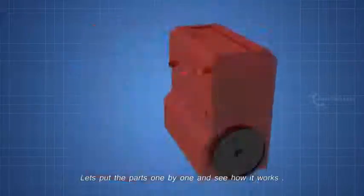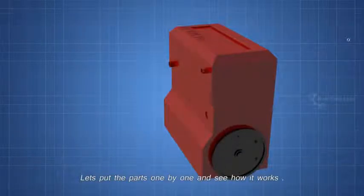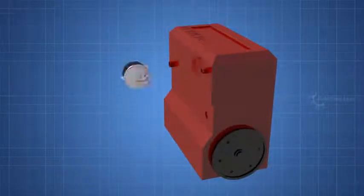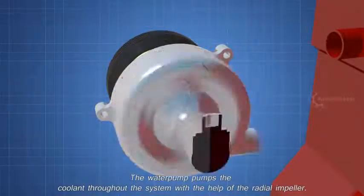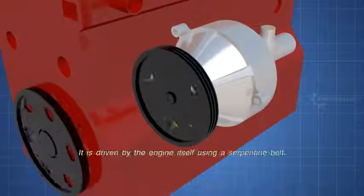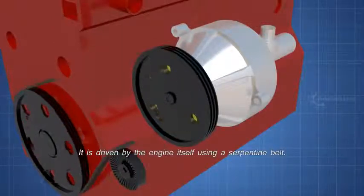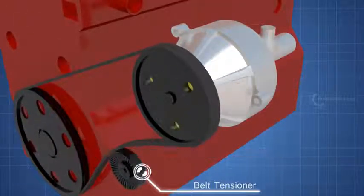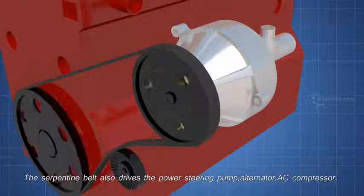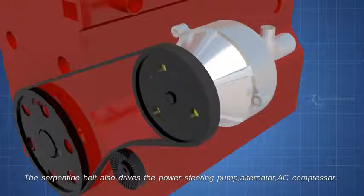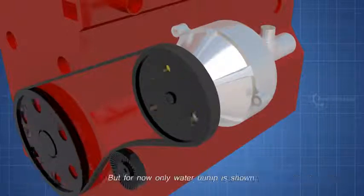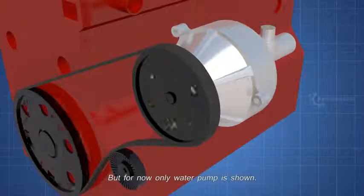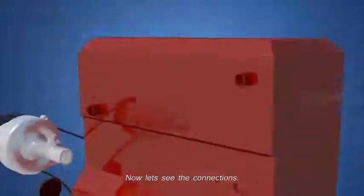Let's put the parts one by one and see how it works. The water pump pumps the coolant throughout the system with the help of the radial impeller. It is driven by the engine itself using a serpentine belt. The serpentine belt also drives the power steering pump, alternator, AC compressor. But for now only water pump is shown.